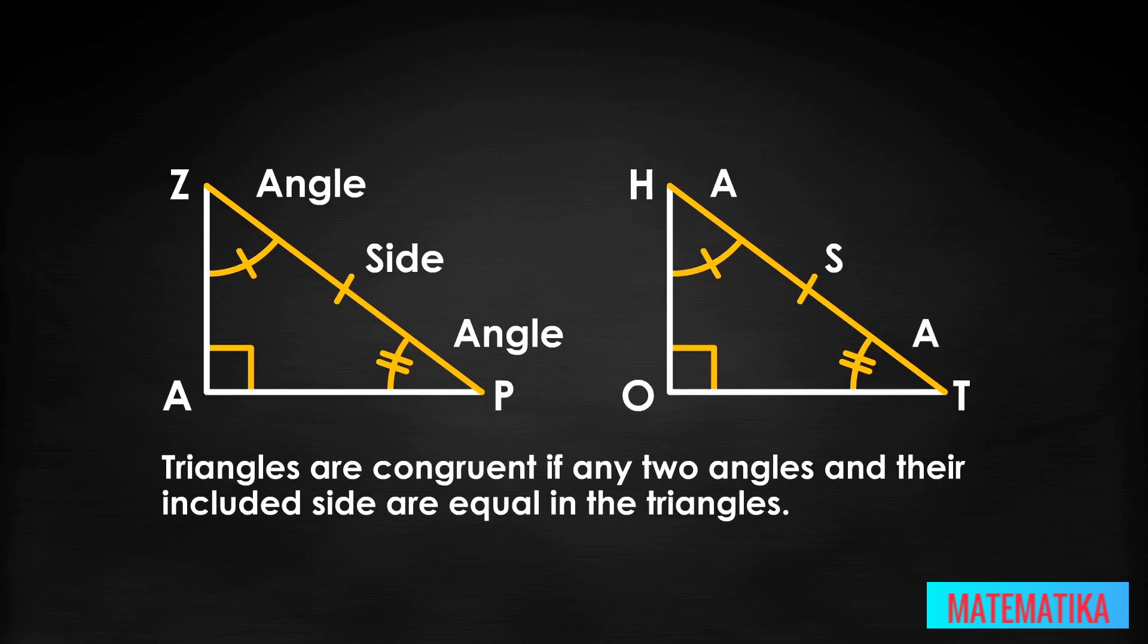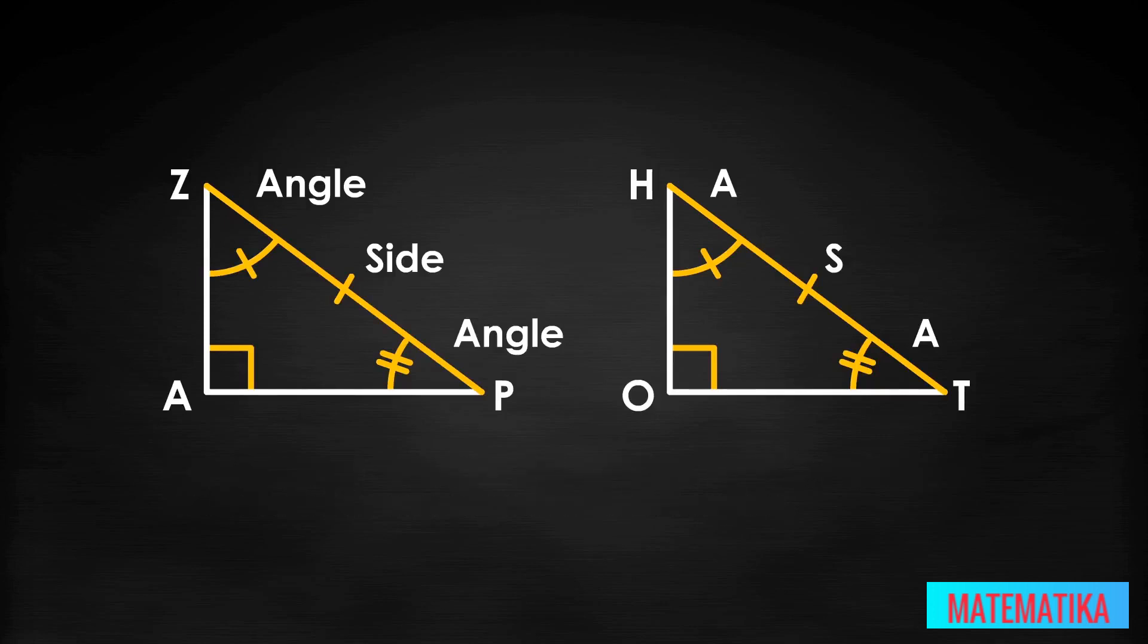Building off that handy right angle, we worked out two included angles on either side of the hypotenuse. This allows us to apply the ASA postulate and know that the triangles are congruent. Now, do you need to go through all that every time you want to show two right triangles are congruent? No. You can use the HA theorem instead.